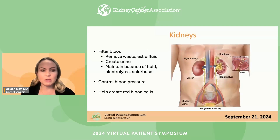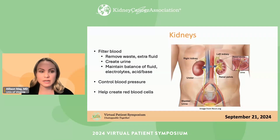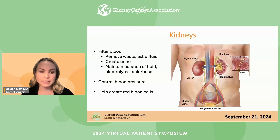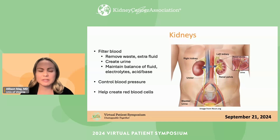It's helpful to understand the kidneys by going through some physiology and anatomy. Most people have two kidneys — you can see the right kidney and the left kidney in the image here. Some people have one, and you can function usually just fine with one kidney. The main job of the kidneys is to filter the blood, removing waste and excess fluid and putting that into the urine, maintaining proper balance of fluid, electrolytes, and acid-base balance. The kidneys also control blood pressure and help create red blood cells.